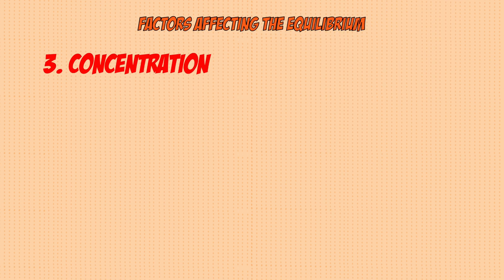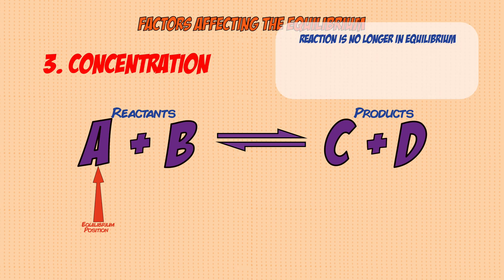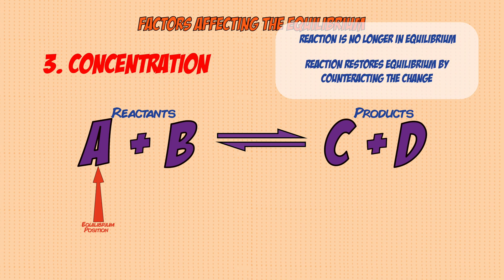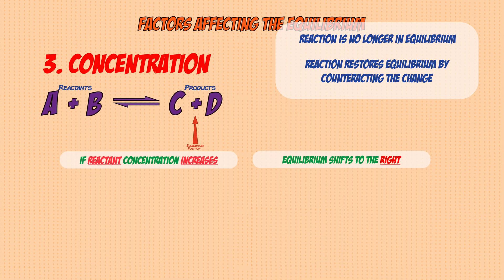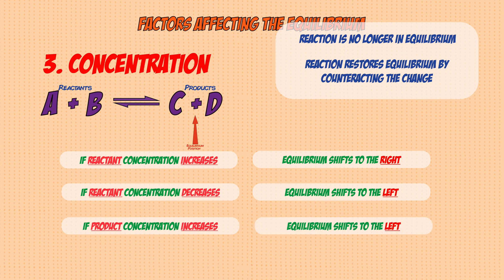The final factor is concentration, which works differently. If you increase the concentration of reactant A, the equilibrium balance is disrupted. The reaction responds by shifting right to reduce the increase in reactant A, which increases the amount of products. If you decrease reactant concentration, the equilibrium shifts left. The same principle applies to products: increasing product D shifts equilibrium left, and decreasing it shifts equilibrium right.